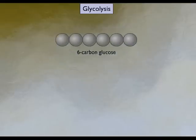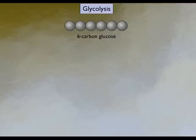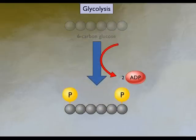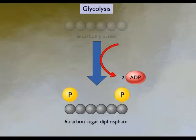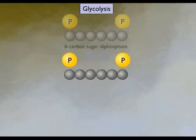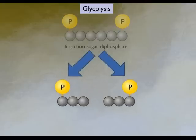The initial steps in glycolysis are the additions of two phosphates to the glucose molecule at the expense of two molecules of ATP. The result is a six-carbon sugar diphosphate molecule and two low-energy adenosine diphosphate molecules, or ADP. This six-carbon sugar diphosphate molecule is then split into two three-carbon molecules.